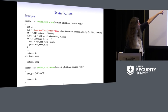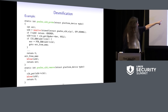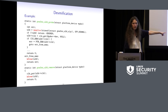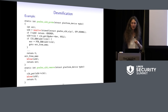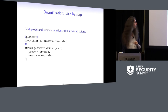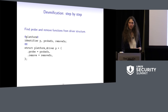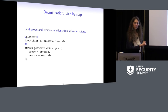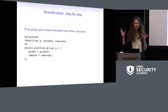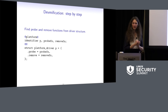To find the probe and remove functions, rather than using a regular expression assuming names end in 'probe' or 'remove,' we realize probe functions are stored in a particular field of a particular kind of structure — specifically the platform_driver structure. So we write a rule that collects the probe and remove function names by looking at how they're stored in that structure. This rule doesn't add or remove anything — it just collects information using named meta-variables that can be referenced from other rules.